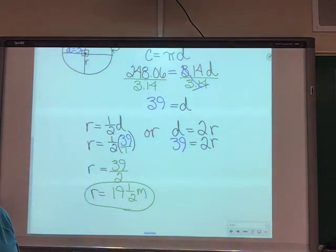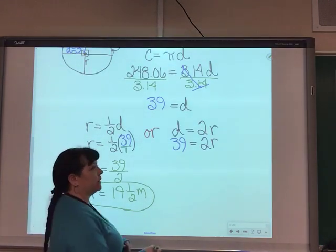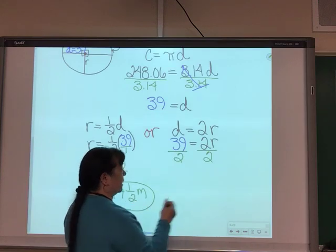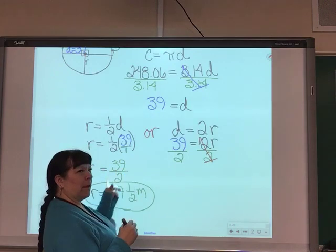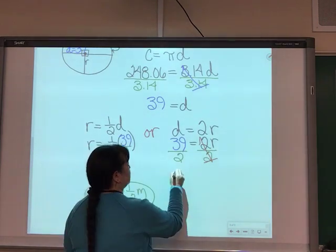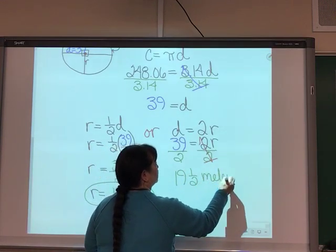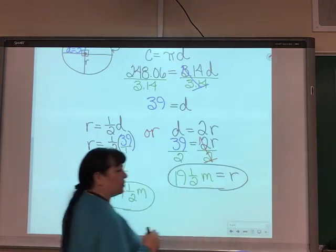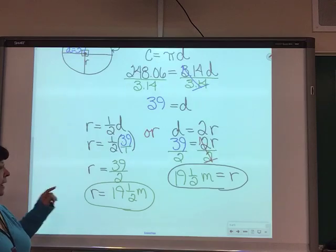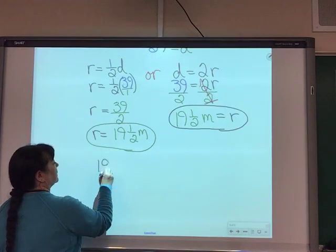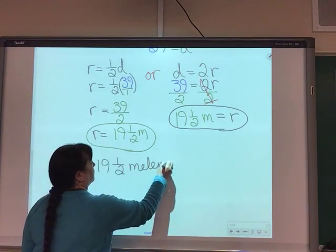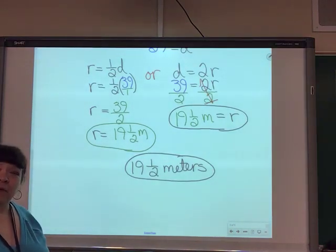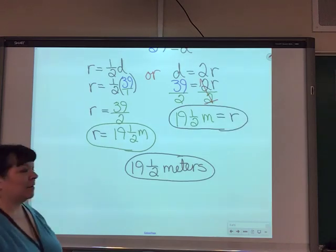But wait. What if I chose to use that one? I need to get r isolated, which means I need to eliminate times 2 by dividing 2. To keep it balanced, what I do to one side, I do to the other side. 2 halves is 1. We just did that. 39 divided by 2 is 19 and a half meters. So from the center of the Washington Monument out to its outer edge of the flags is 19 and a half meters, regardless of which one we used. Isn't that interesting, that relationship, that it really goes back and forth? Two sides of the same coin.